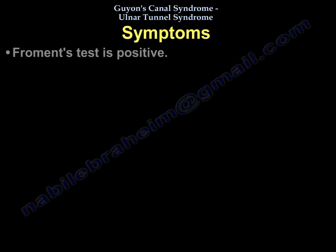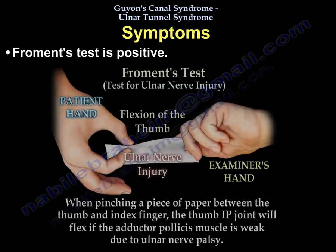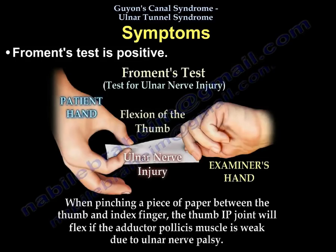Froment's test is positive in ulnar nerve palsy. It is a good test for ulnar nerve injury: when pinching a piece of paper between the thumb and index finger, the thumb IP joint will flex if the adductor pollicis muscle is weak due to ulnar nerve palsy.